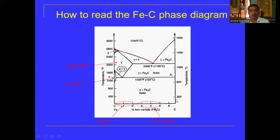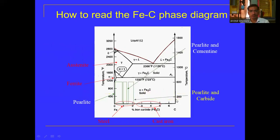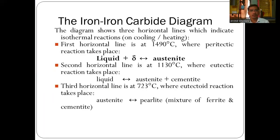We can also see the ferrite phase, then austenite, then steel from 0.008 percent to 2 percent carbon, then cast iron from 2 to 6.67 percent carbon. One zone represents the pearlite phase, another represents pearlite and cementite, and another represents pearlite and carbide. The first horizontal line at 1490 degree Celsius is where the peritectic reaction takes place — liquid plus delta ferrite converts to austenite. The second horizontal line at 1130 degree Celsius is where the eutectic reaction takes place — liquid transforms to austenite and cementite. The third horizontal line at 727 degree Celsius is where the eutectoid reaction takes place — austenite transforms to pearlite.